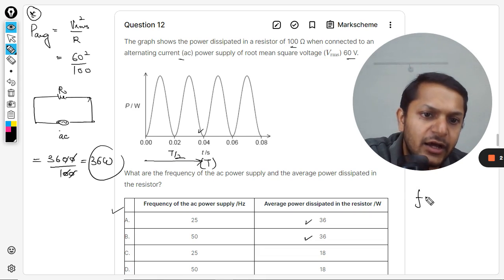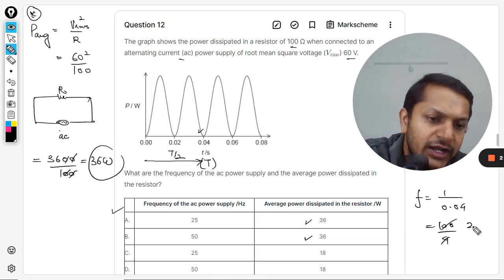And accordingly the frequency will be 1 over 0.04, which can be taken as 100 by 4. Clearly it will be 25 hertz.